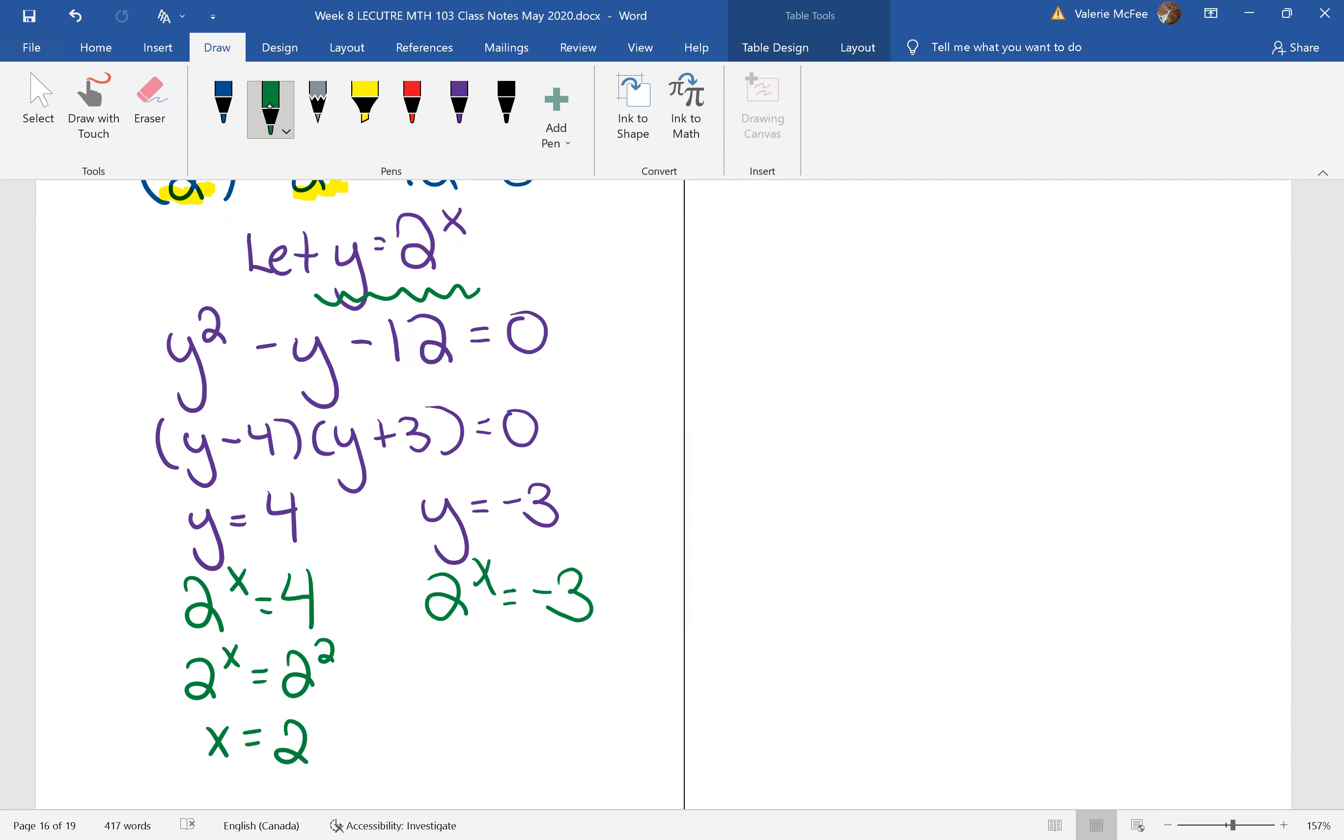But let's think about 2 to the power of x. If you think about the graph of 2 to the power of x, do you remember that there was a horizontal asymptote at y equals 0? And the graph did not go below that. Our answer can never be less than 0. This one has no solution. So we have only one solution for this equation.